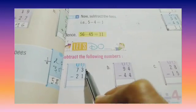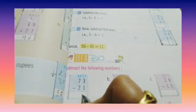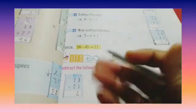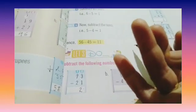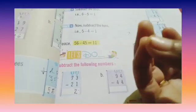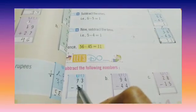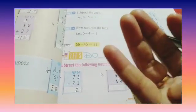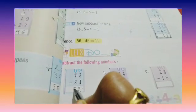So 73 minus 21. So 3 minus 1, 1, 2, 3 minus 1 is 2. So we have to write 2 over here. Now 7 minus 2. So 1, 2, 3, 4, 5, 6, 7, 1 and 2. So how many left? 1, 2, 3, 4, 5. Or we can do like this: 7 is there, so after 2 start counting up to 7. 3, 4, 5, 6, 7. So how many? 5. So 7 minus 2 is 5.